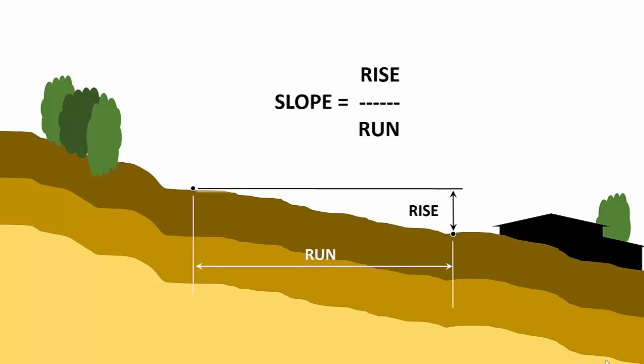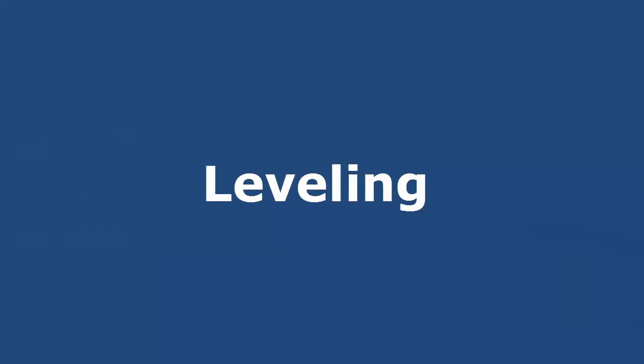Measuring horizontal distance is simple with a tape or with a measuring wheel. But how can we measure the vertical distance — the rise between the points shown here? That vertical distance is best found by a process we call leveling.